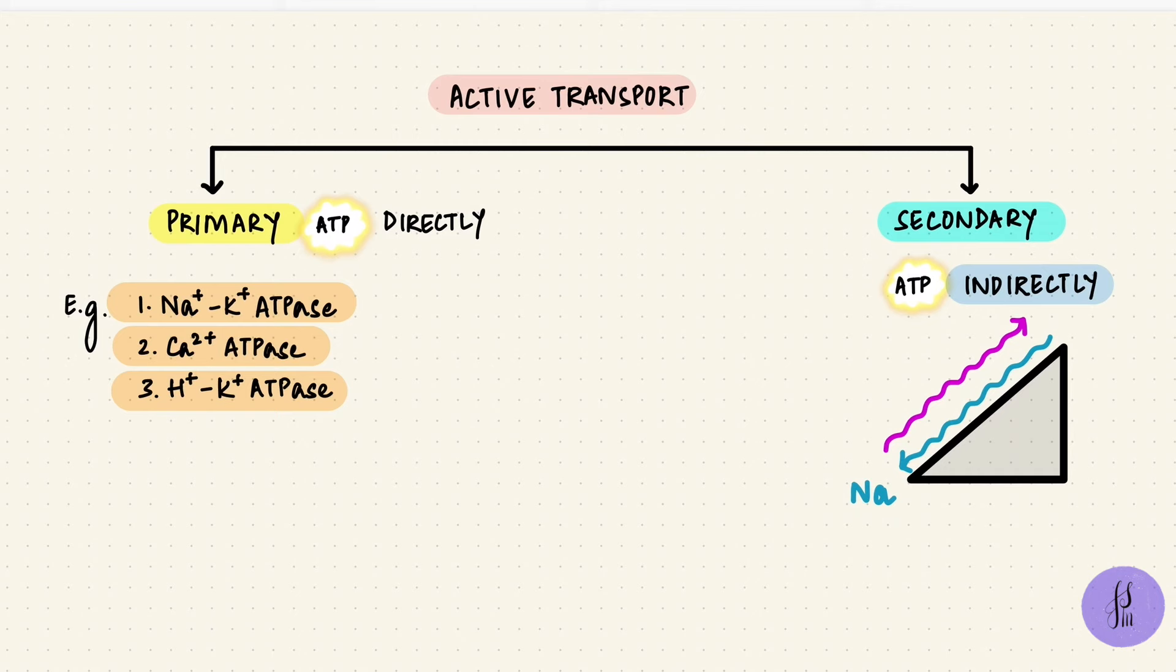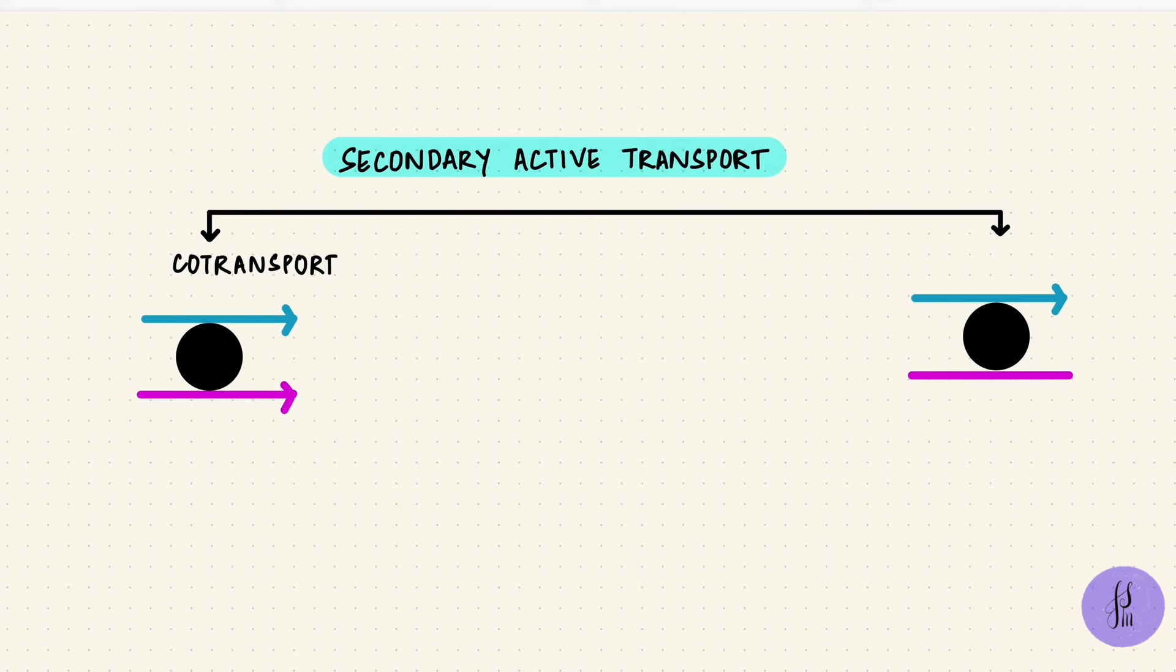Either they can move in the same direction when it's called co-transport, or they can move in opposite directions, when it's called counter-transport. Co-transport, the best places to understand that are in the intestines and the kidney. To understand this we're going to take the kidney as an example.